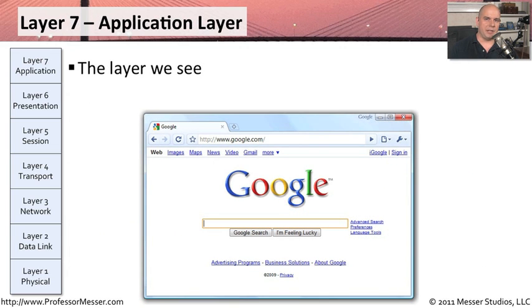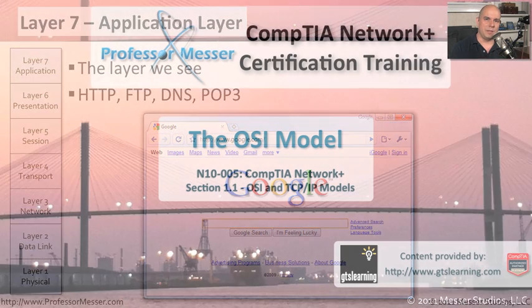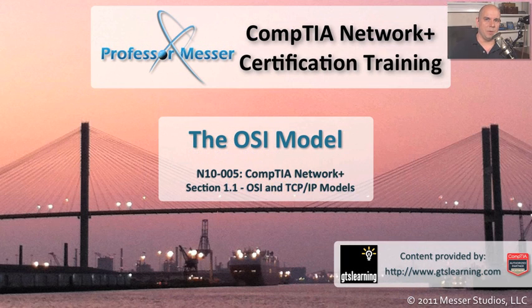Layer 7 is the application layer — finally the layer we get to see on the screen of our computer. It sends information to web servers, retrieves and displays email, shows us database information we requested, and displays it in a format we can understand. All of these layers of the OSI model work together so that you're able to send information from one computer to another, and everything works seamlessly all the way through the network.